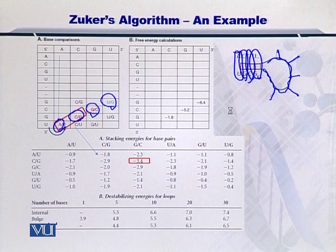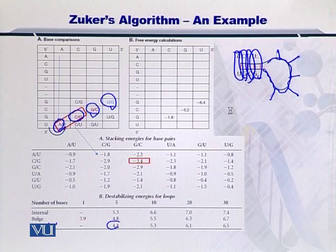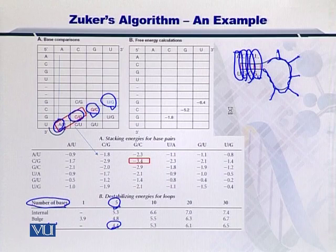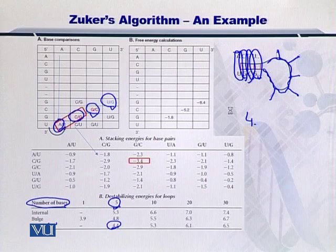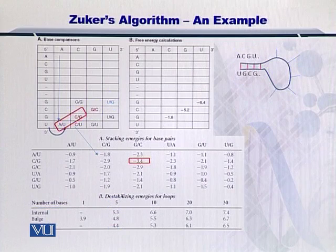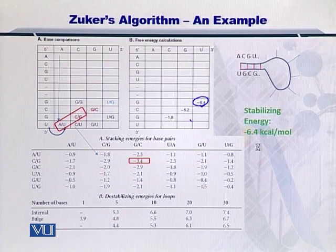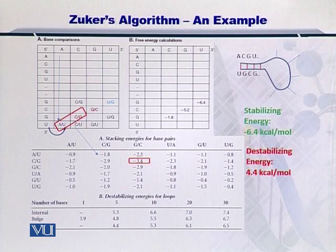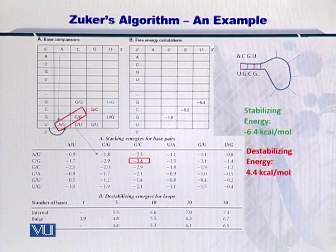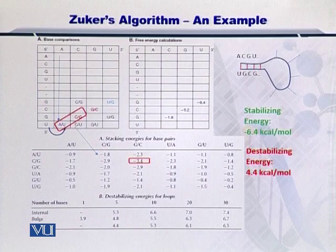It's a hairpin, right? If there are 5 nucleotides which are unpaired, then you can add 4.4 kilocalories to the overall energy profile. So the stabilizing energy in this case is minus 6.4 and the destabilization energy is plus 4.4. If you add them up, you will arrive at the overall energy of the molecule.